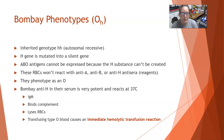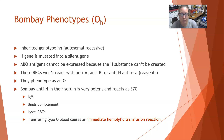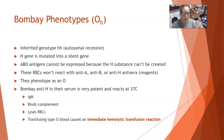Bombay phenotype individuals will phenotype as an O, meaning in your forward type there will be no reaction with anti-A, anti-B, or anti-AB whatsoever. You would expect to detect anti-A and anti-B antibodies in the reverse type. Bombay types also have anti-H in their serum, and it is very potent because they don't make the H antigen — therefore they can make anti-H antibody. This anti-H antibody in their serum is an IgM and can react at 37 degrees Celsius at body temperature. It can bind complement and lyse red cells.